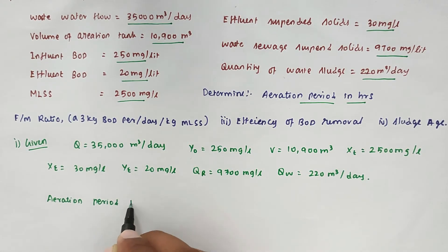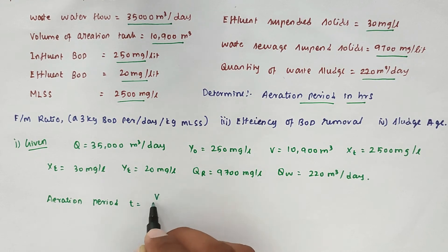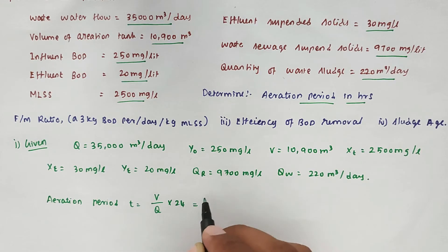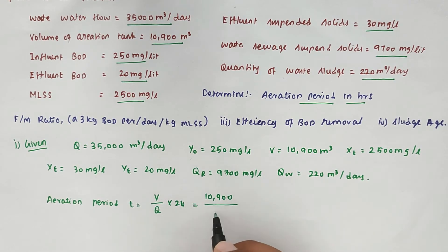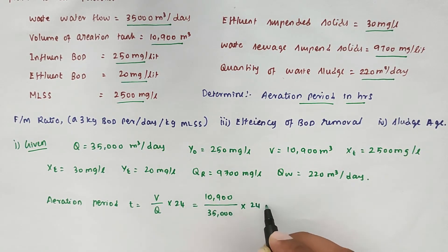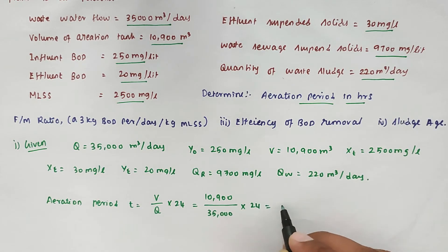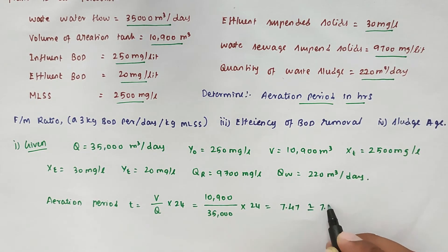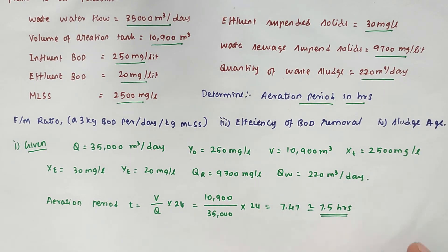Now we can take 10,900 divided by 35,000 times 24 hours. So we got the value of 7.47, that is 7.5 hours. This is the first question's answer.